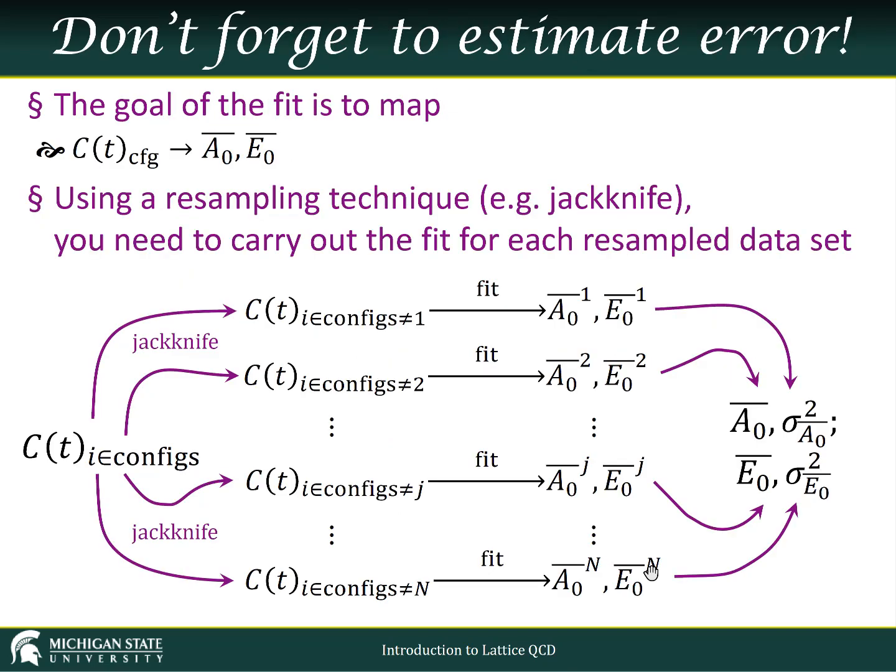So the goal of the fit is to map all of our configurations, we have some correlator on each of our configurations, to an expected value, our mean value, our best prediction for these two parameters, a sub nought and e sub nought.